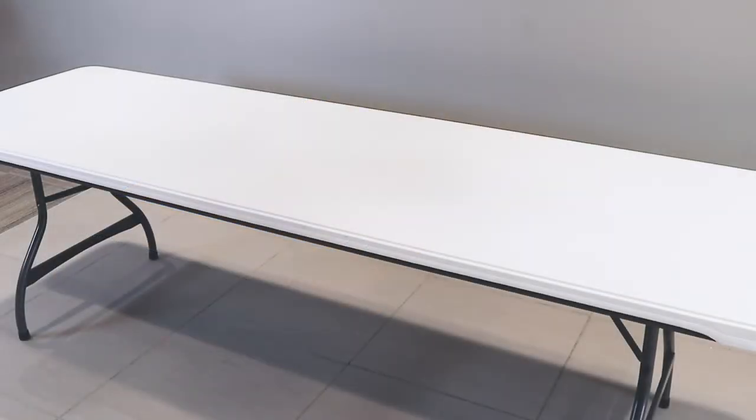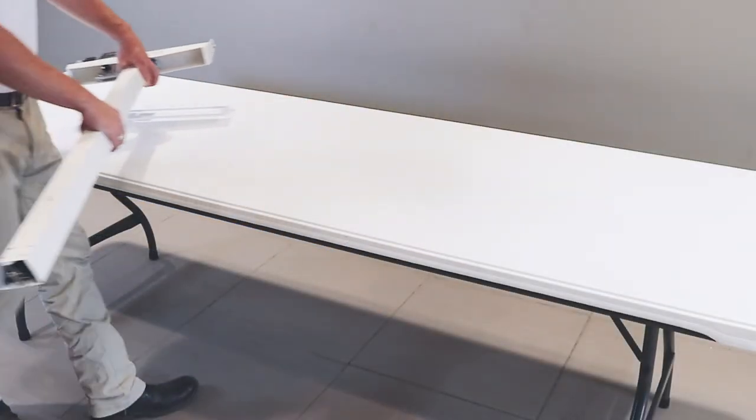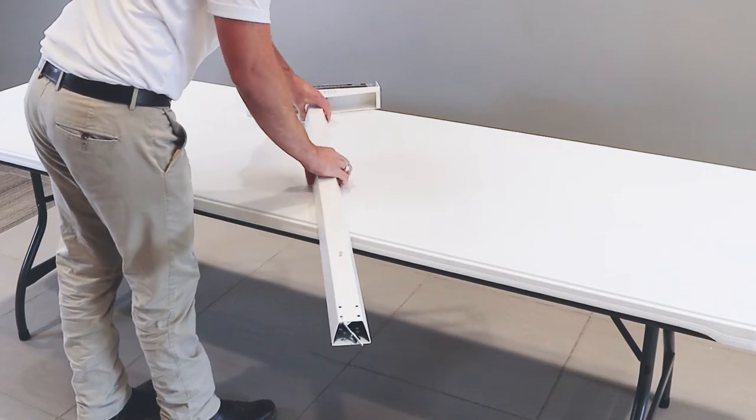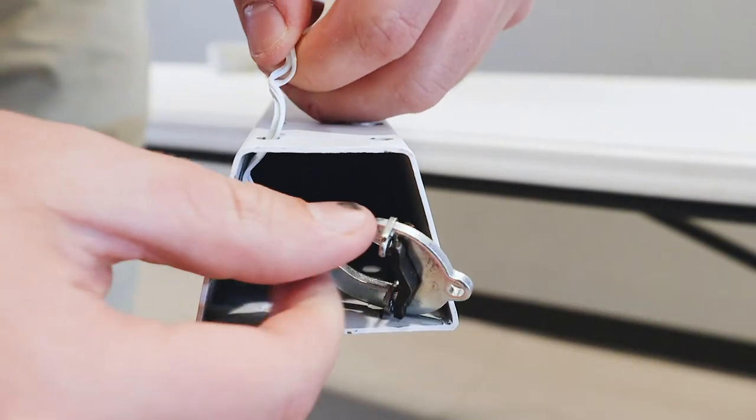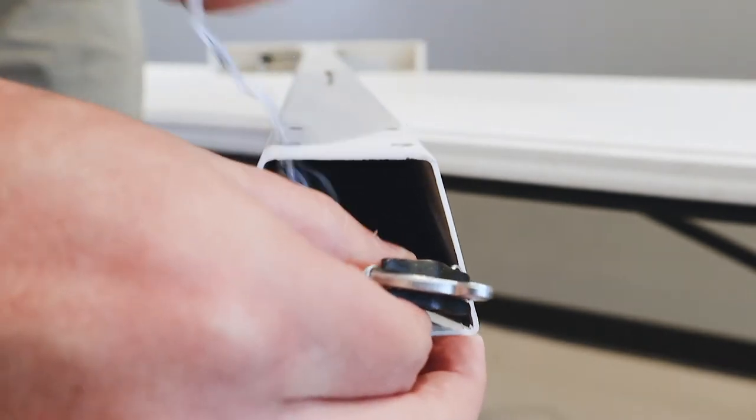After unpacking, set aside your packing materials and start with the column. Set the column on a table or workbench and on the open end, remove the cable tie securing the draft rod during shipment.